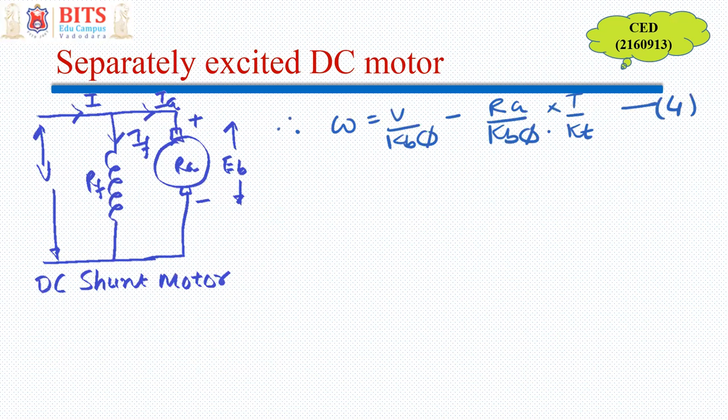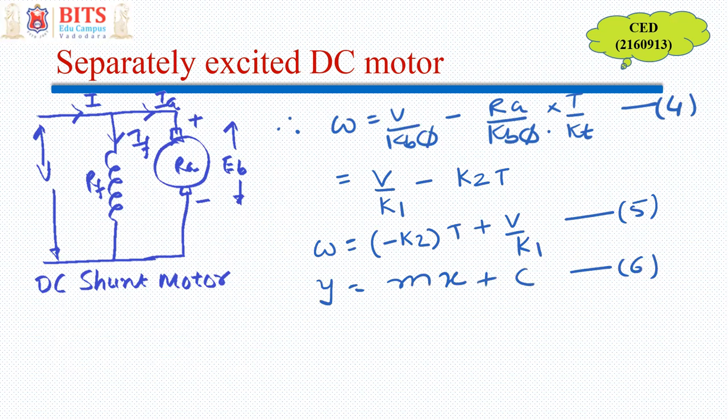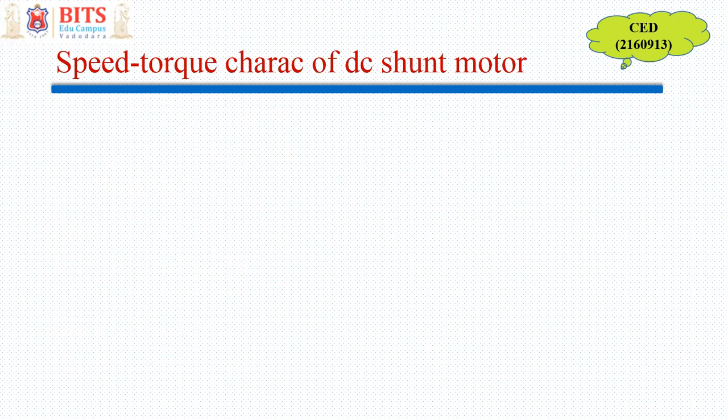And what I can say over here is that this speed versus torque characteristics is similar to the straight line equation, which is y is equal to MX plus C. So in a same manner, I can plot the speed versus torque characteristics of DC shunt motor drive.